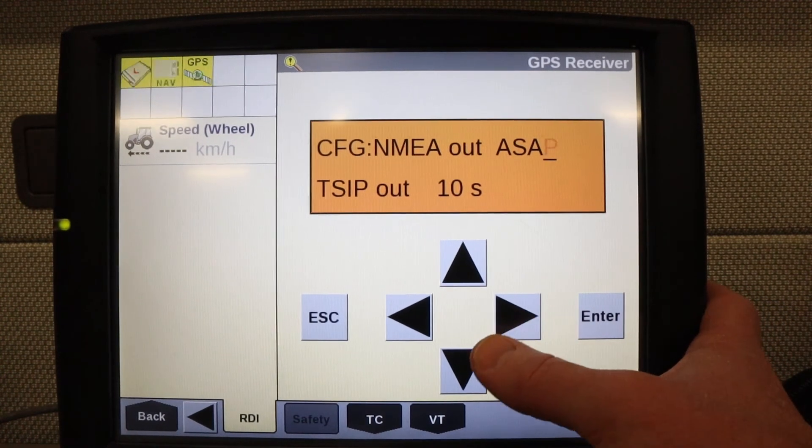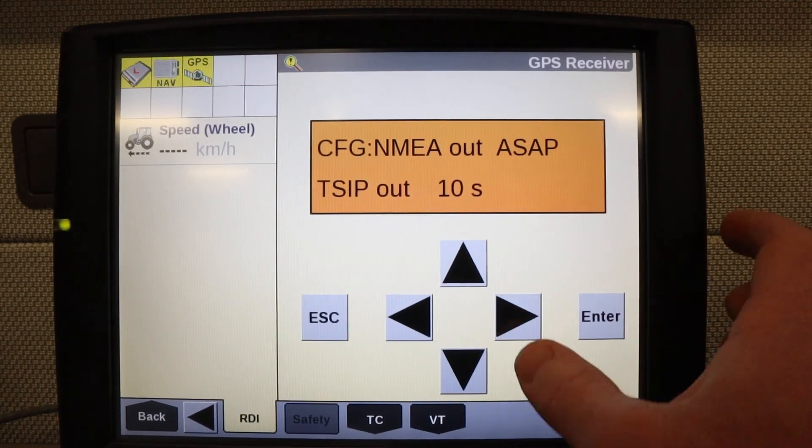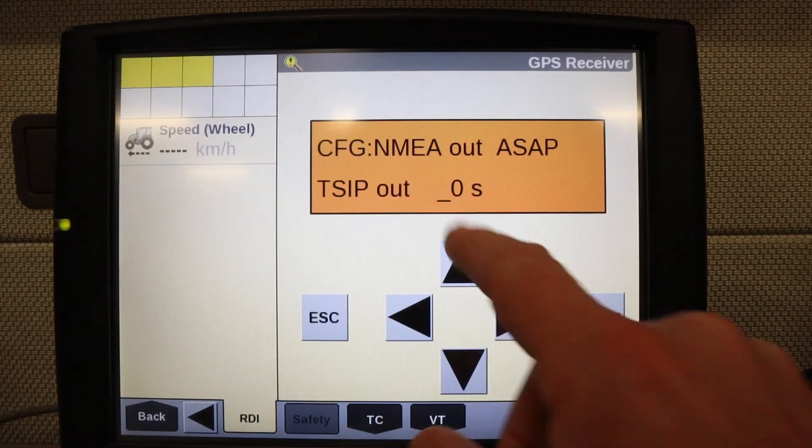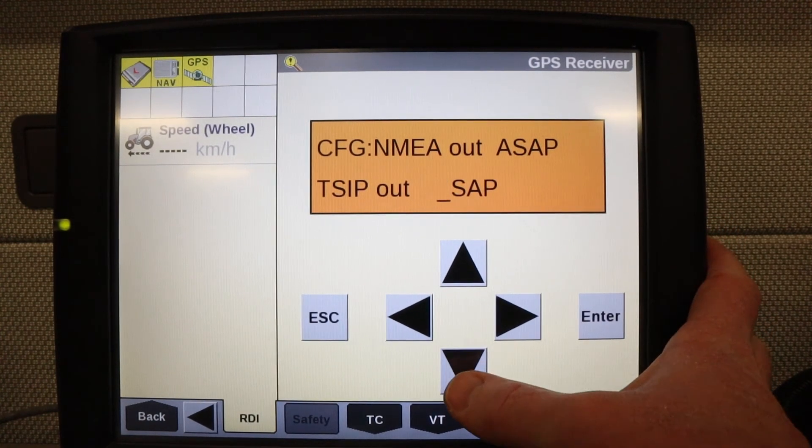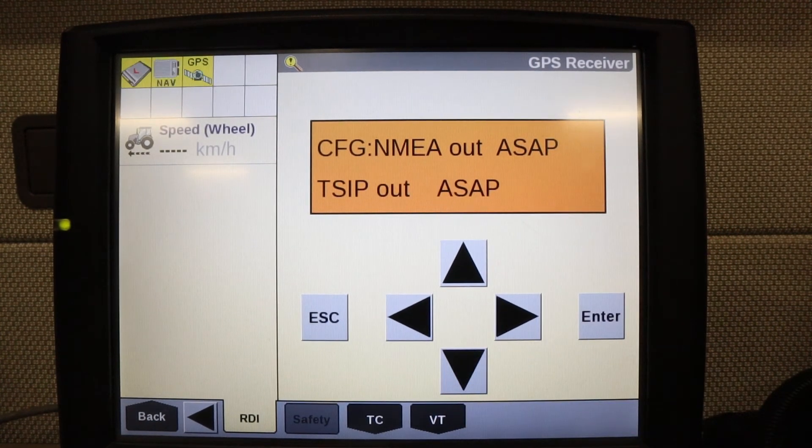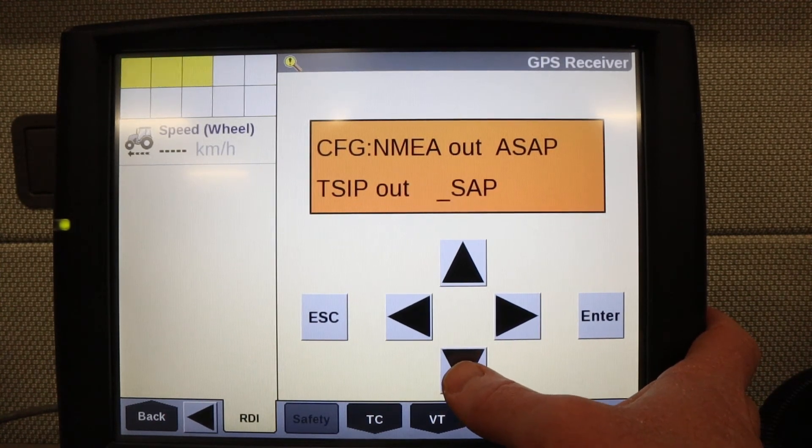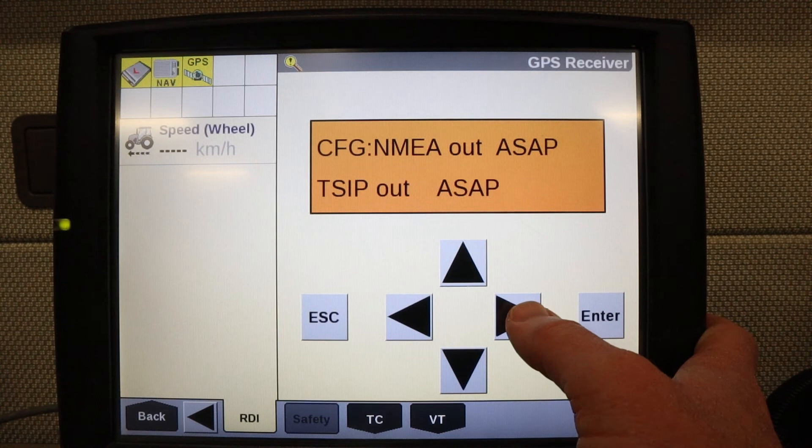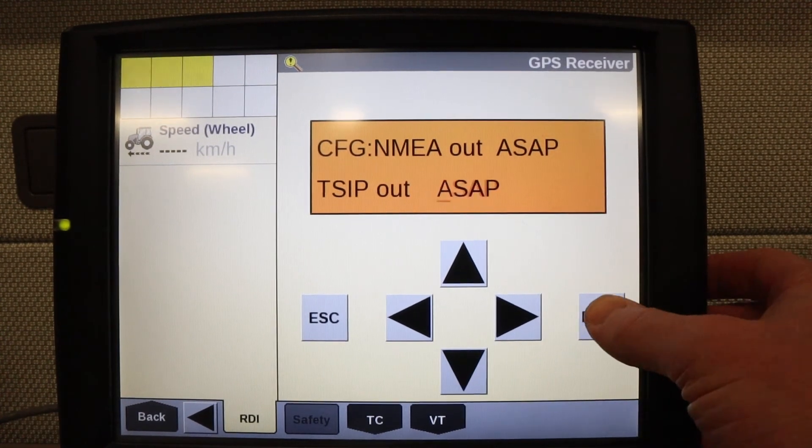I'm going to press the right arrow to get a cursor. Right arrow again to move it to that bottom line. Now I can press the down arrow to change that to ASAP. If that didn't do it when you press the down arrow the first time, press the right arrow once and then the down arrow again. Press enter on that screen.